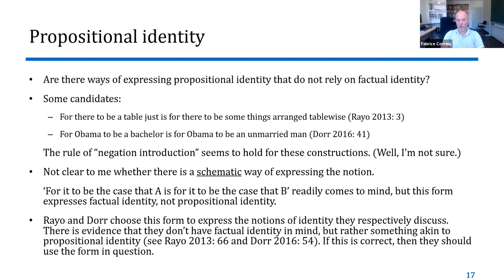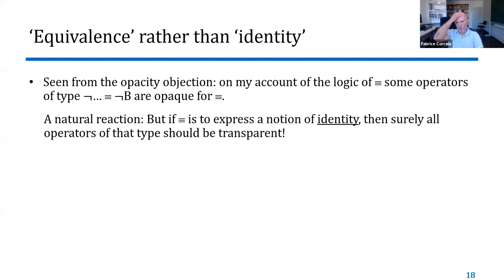It's not clear to me whether there is a schematic way of expressing propositional identity in English. The locution 'for it to be the case that A is for it to be the case that B' is a natural candidate, but I've argued this locution expresses factual identity, not propositional identity, which is a stronger notion. If Dorr and Rayo have propositional identity in mind, then there is some evidence — things are not completely clear — that they should not use this locution to express it, because it naturally expresses factual identity.